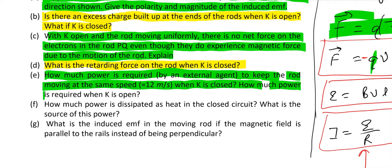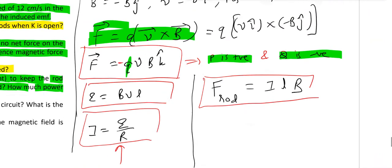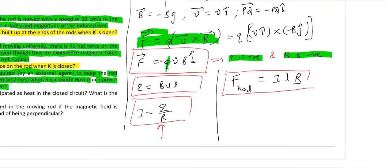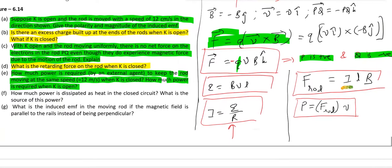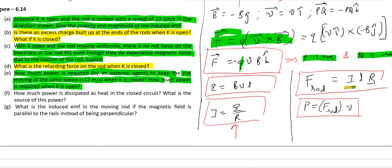How much power is required by an external agent to keep the rod moving at the same speed when K is closed? How much power is required when K is open? F equals ILB is the force required. So to calculate power, we can use the formula F of rod into velocity of rod. So this much power is required to keep the rod moving when key is closed, because only when key is closed at that time you have I passing through the rod and then there is force ILB. Suppose if key K is open, there is no current. If there is no current, there is no force. If there is no force, you are not spending any power.